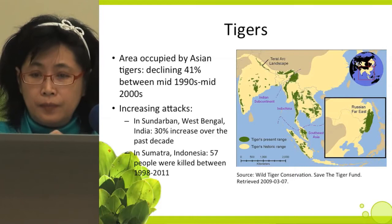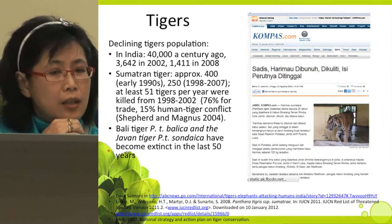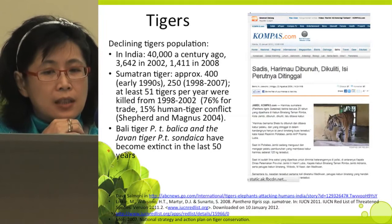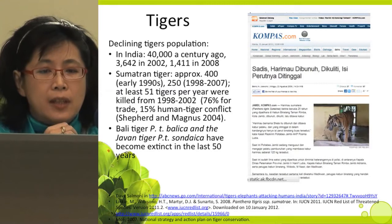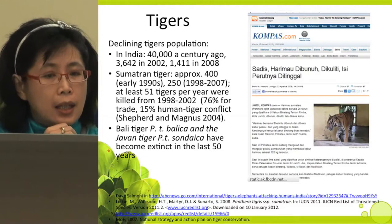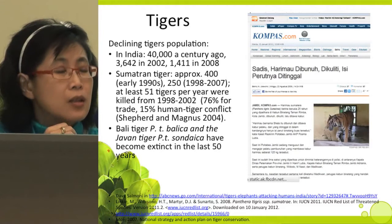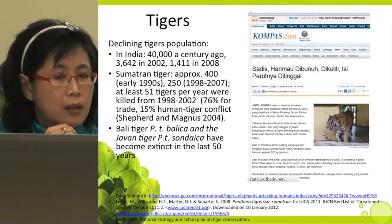In Sumatra, Indonesia, 57 people were reported killed between 1998 to 2011. Besides reports of attack, the tiger population is also declining. In India, a century ago it was 40,000, declining to around 3,600 in 2002 and 1,411 in 2008. The Sumatran tiger in the early 1990s was approximately 400, then between 250 from 1998 to 2007, with at least 41 tigers reported killed per year between 1998 and 2002. Reports indicate 76% killed due to trade and 15% due to human-tiger conflict, totaling 51 tigers killed per year.